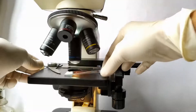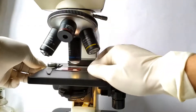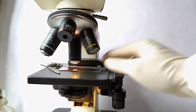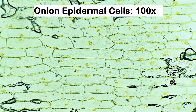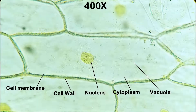Observe and study the onion peel under low and high power of the microscope. Onion epidermal peel is composed of numerous, compactly arranged, elongated and roughly rectangular cells. Each cell has a deeply stained spherical nucleus and cytoplasm that surrounds a large central hollow vacuole.